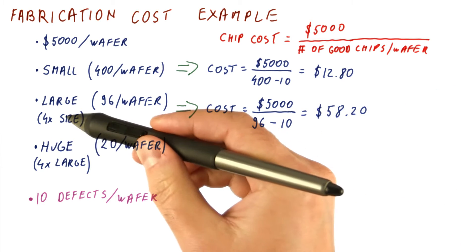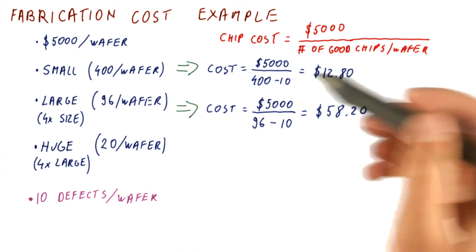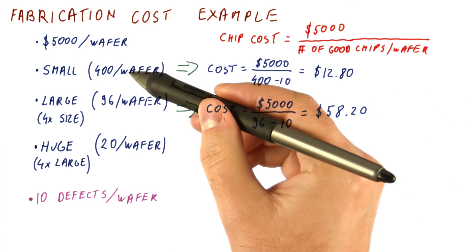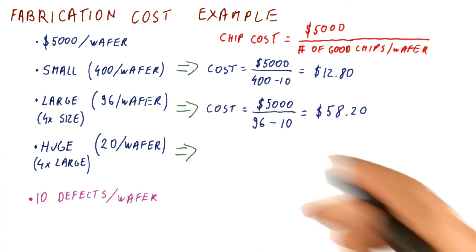So note that the chip is only four times the size of a small chip, but the cost is about five times the cost of a smaller chip.